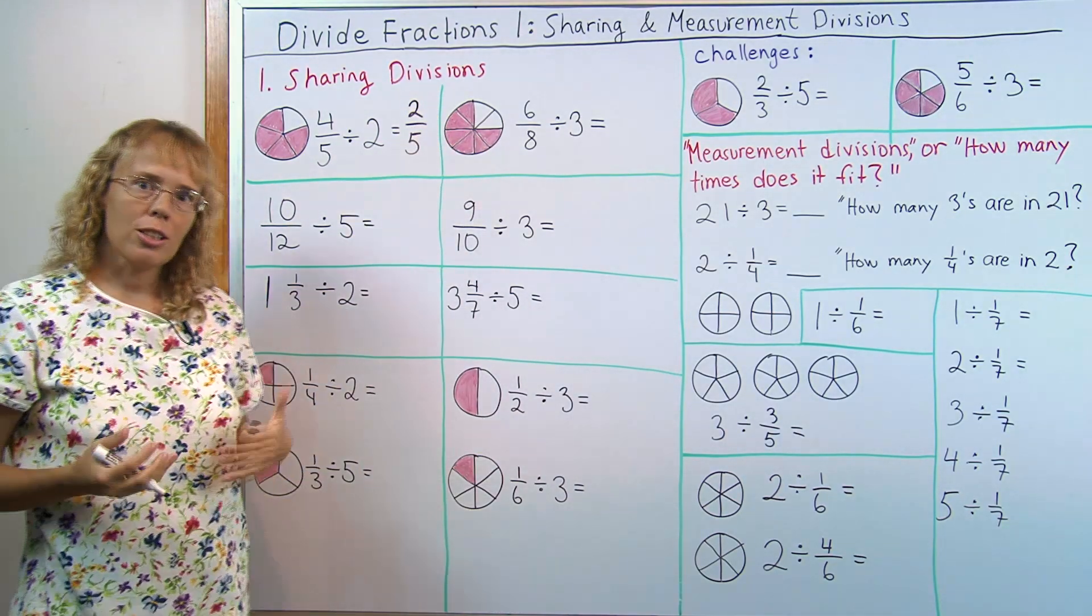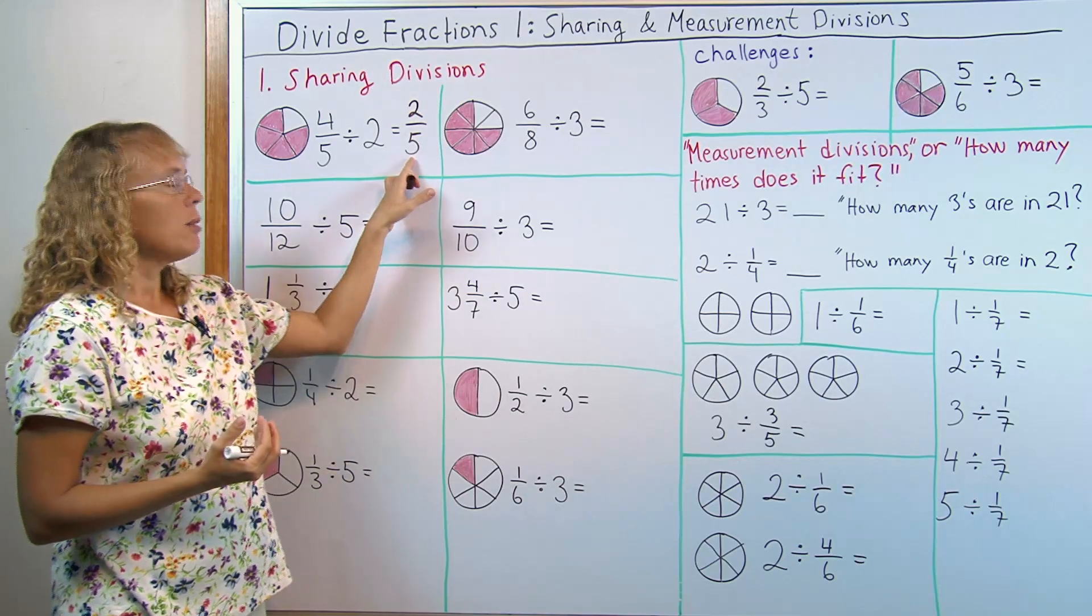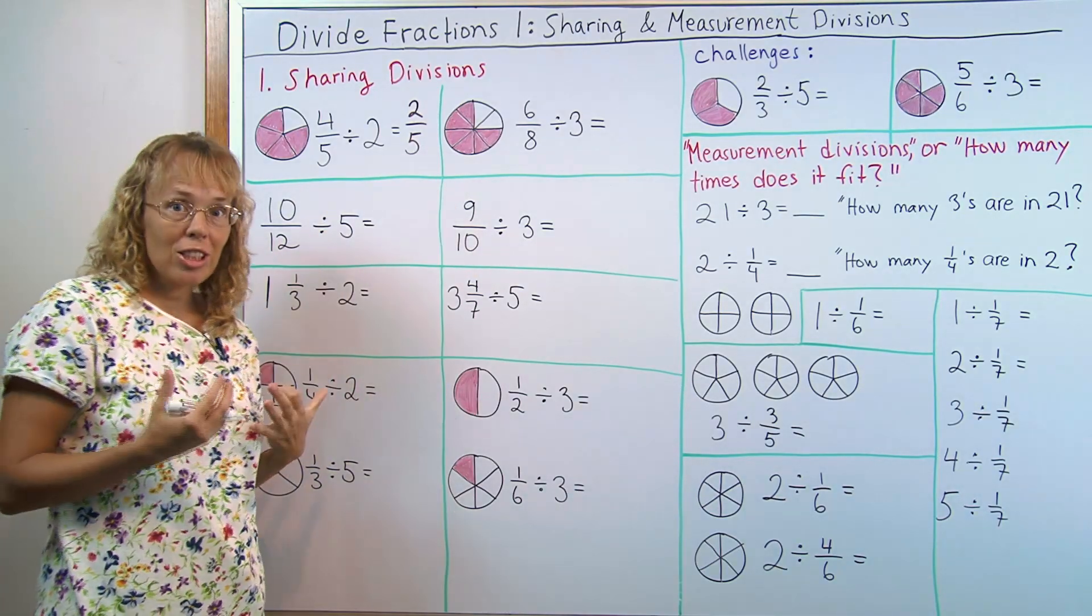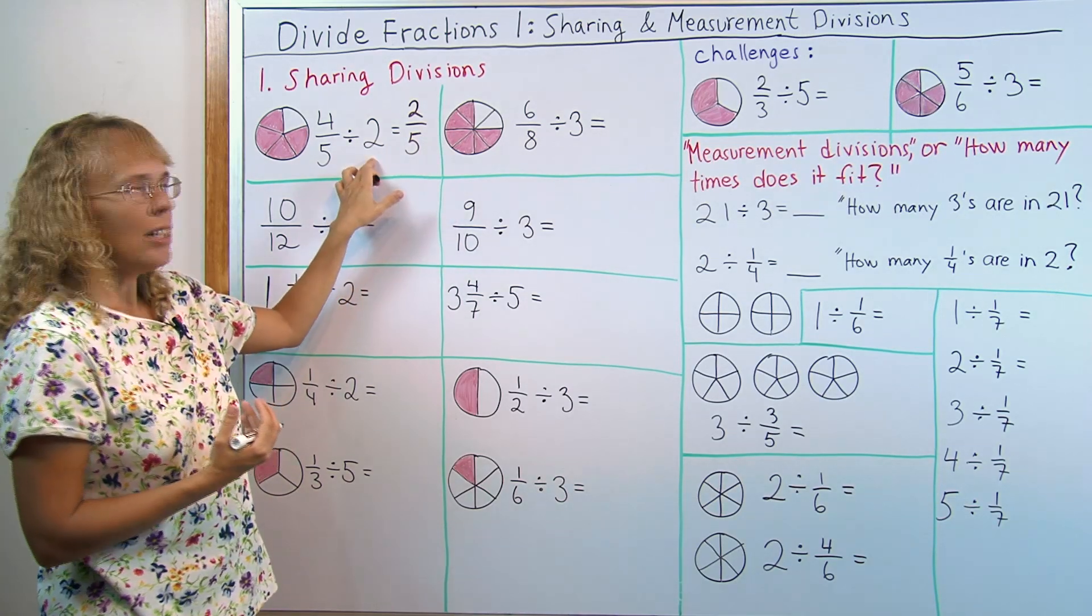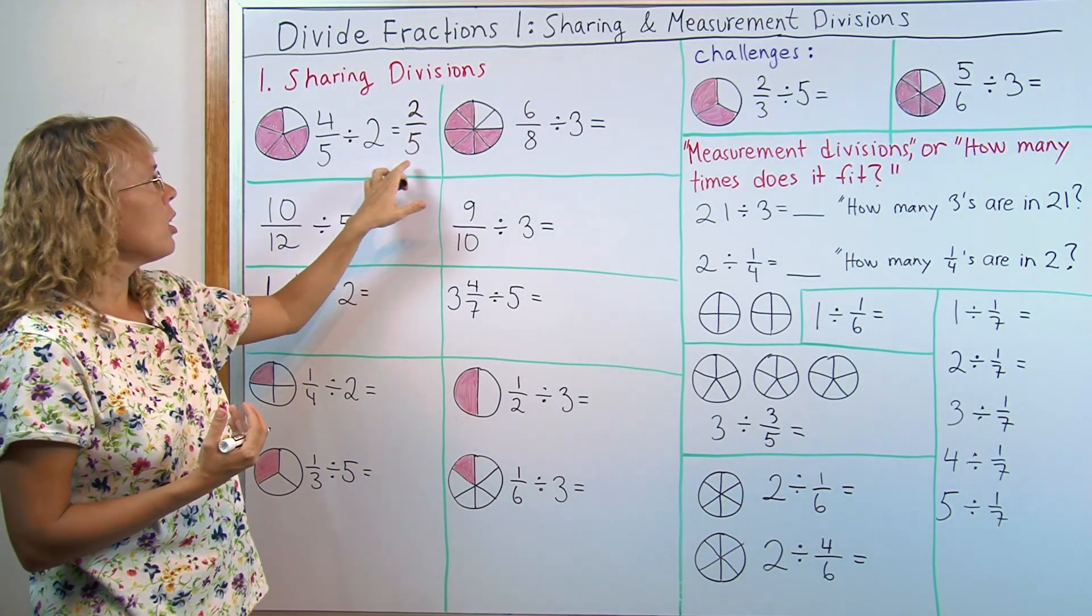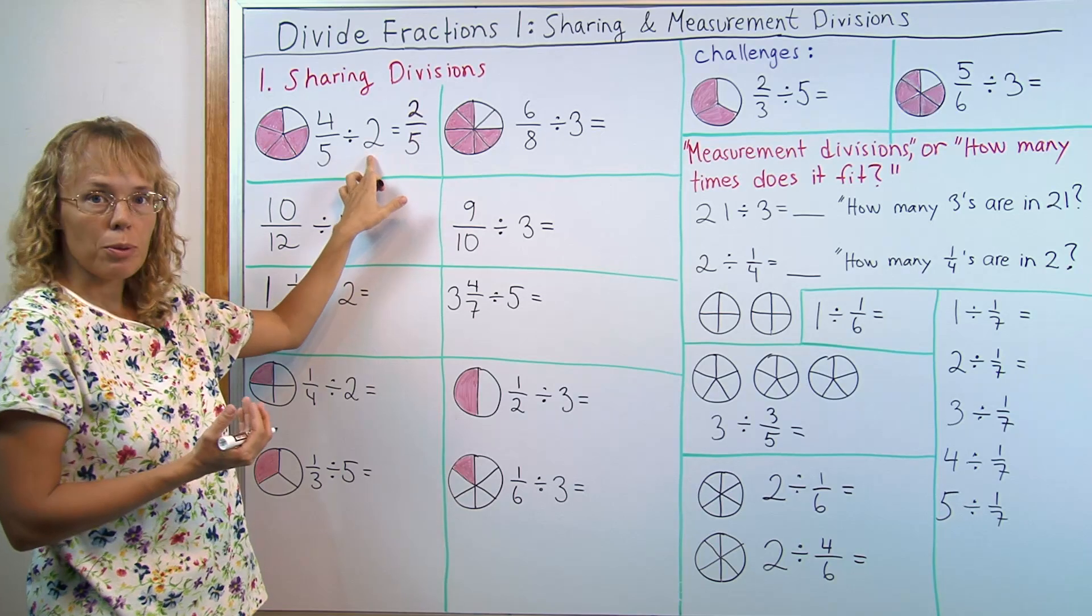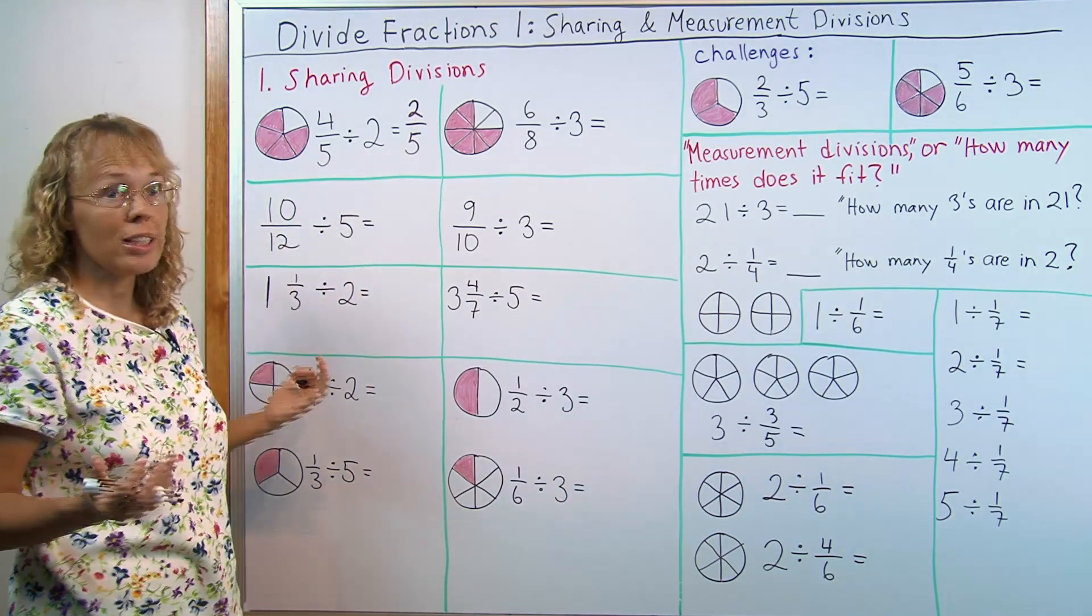You can also check this answer by multiplication because division and multiplication are opposite operations. So I can go this times this and check if I get four-fifths. Two-fifths times two. Is it four-fifths? And sure it is.